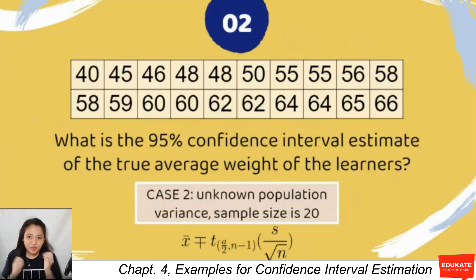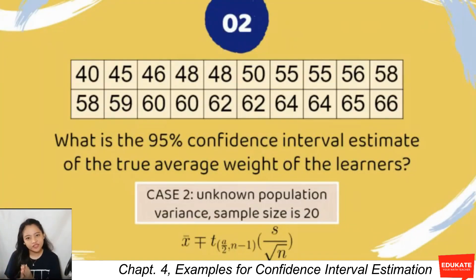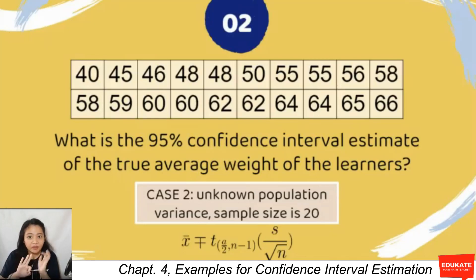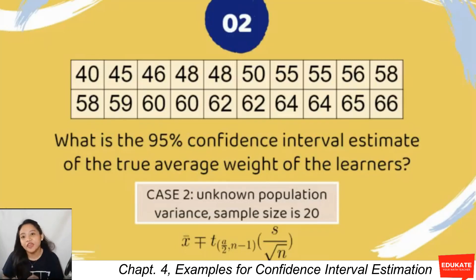Moving on to example two: given raw data, what is the 95% confidence interval estimate of the true average weight of the learners? Since there is no population variance given, we look at cases two and three. The difference between them is sample size — if n ≥ 30, it's case three. With only 20 learners and unknown population variance, this falls under case two.